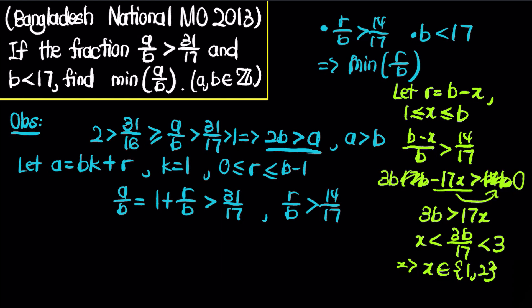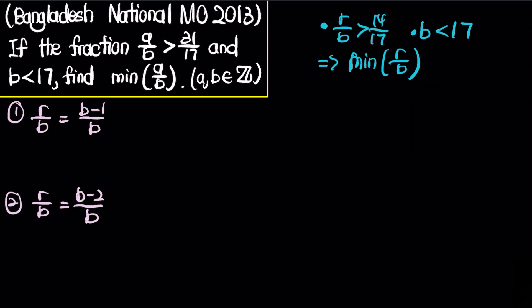Knowing this, r must be either b minus 1 or b minus 2. In the first case we pick r equal to b minus 1, and in the second case r equal to b minus 2. In each case, we check all possible values of r over b to find the minimum, then compare the two cases to get the final minimum value of a over b. We know b must be between 2 and 16 inclusive.